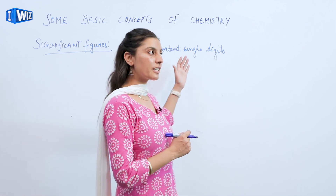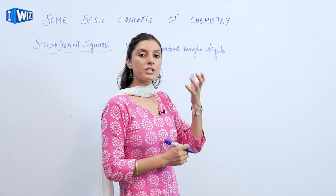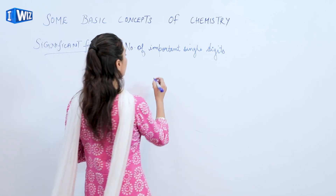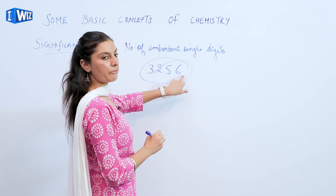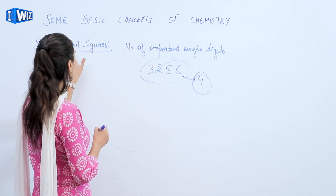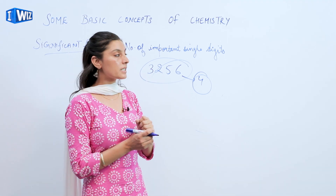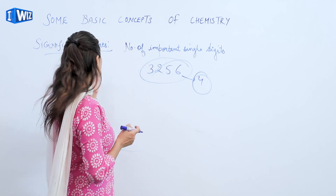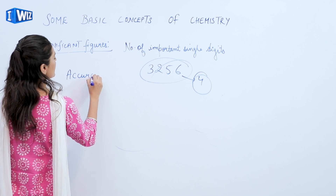Before studying this concept of significant figures — which defines the number of important single digits in a particular numerical value — for example, if I have a value, I will say it has four significant figures. So from here we can conclude that the definition of significant figures is: the number of important single digits present in a given numerical value.